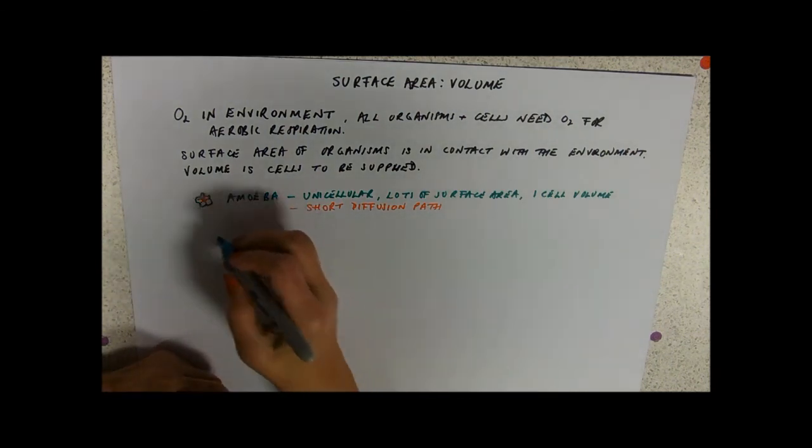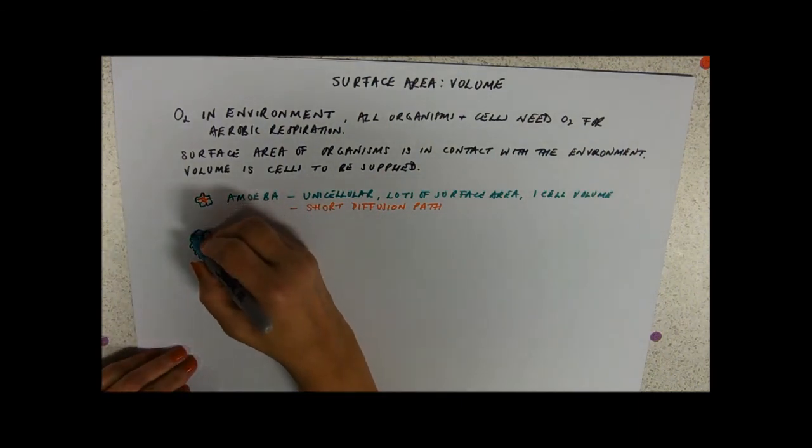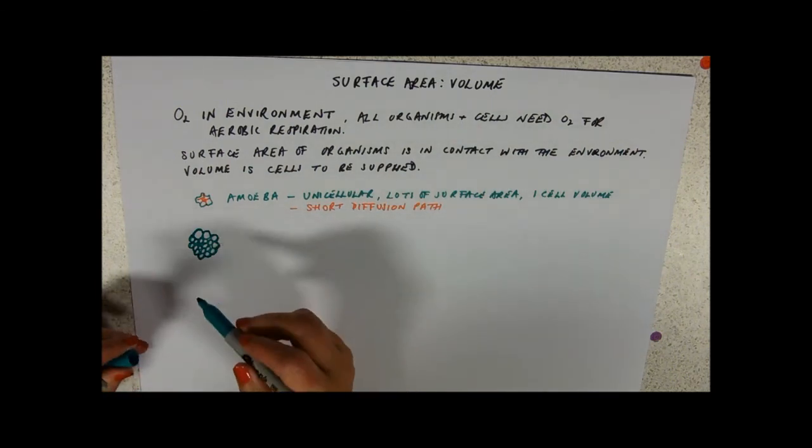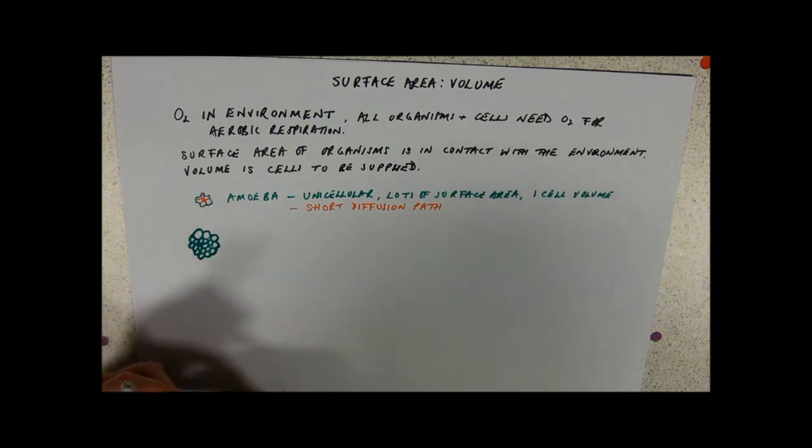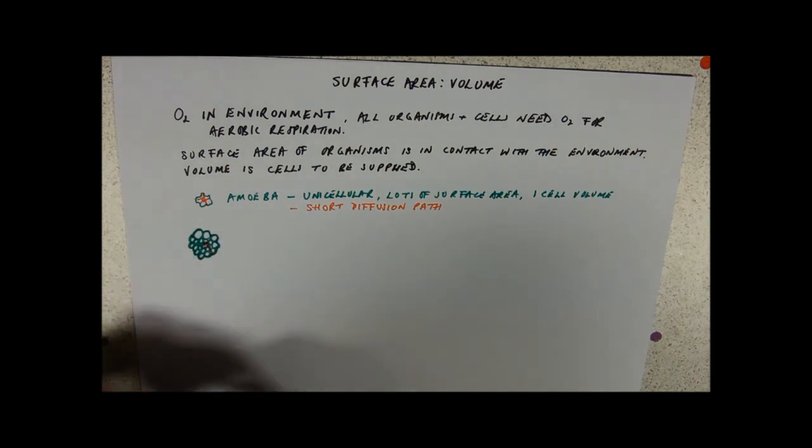Now the problem is, if you get bigger. So multicellular organisms, I'm just going to make up a little random organism made of lots and lots of cells, have issues. Because their surface area is this bit round here. And although it's certainly a bigger surface area than my little picture of my amoeba, it's got an awful lot of cells to supply. And, to compound that, the diffusion distance is bigger to the very middle.